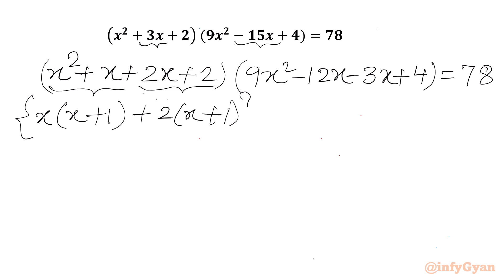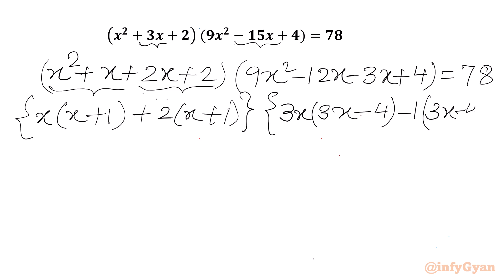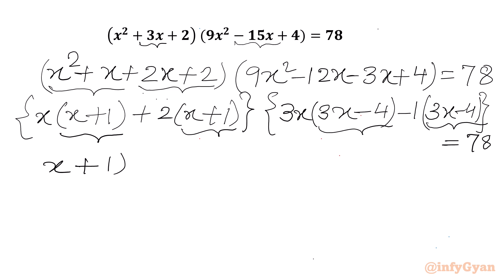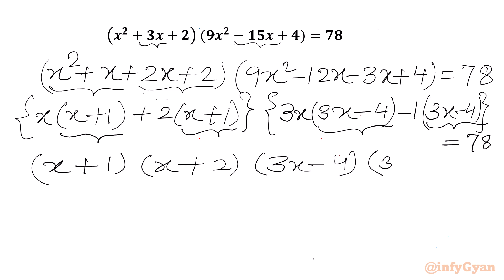For the other bracket, we take 3x common from the first two terms of 9x² - 15x + 4, giving 3x(3x - 4). From the last two terms we take negative 1 common, giving -1(3x - 4). So 9x² - 15x + 4 = (3x - 4)(3x - 1). Our equation becomes (x + 1)(x + 2)(3x - 4)(3x - 1) = 78.